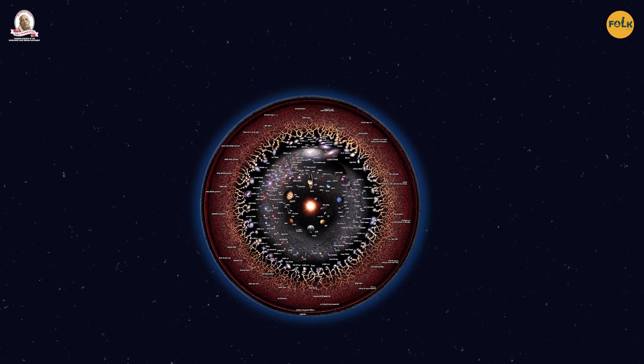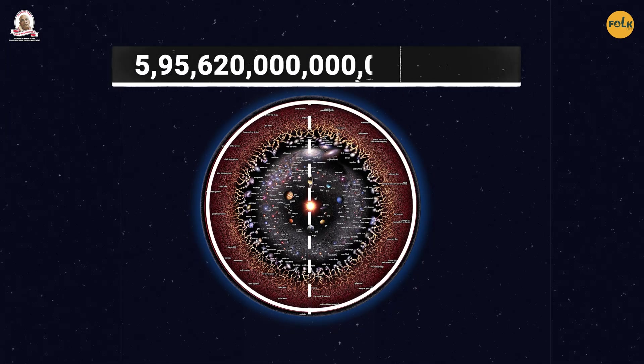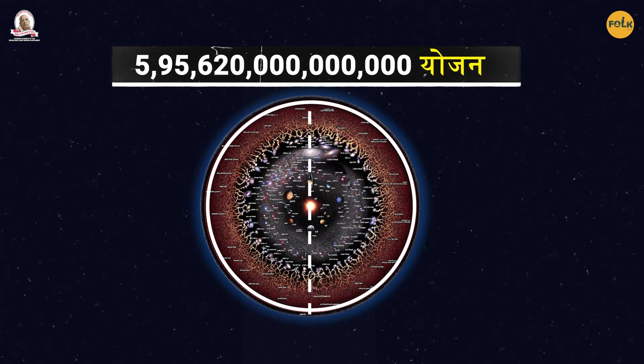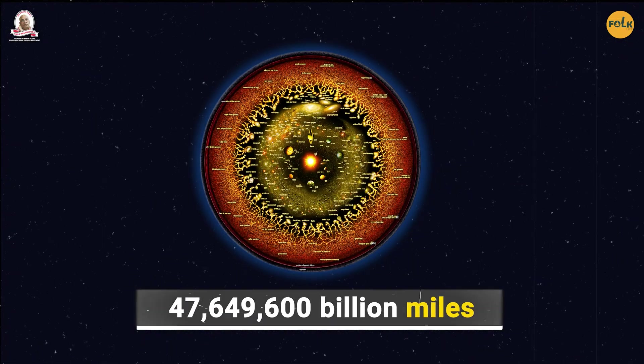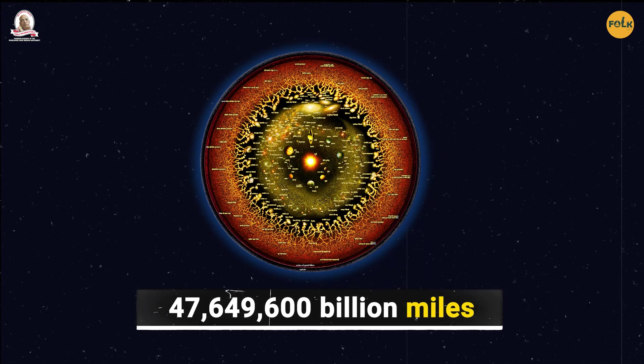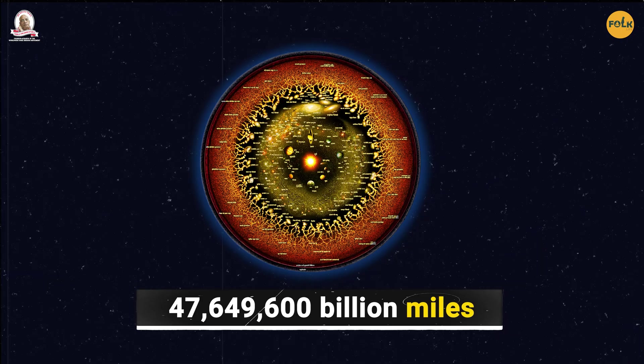who showed that the inner portion of our universe has a circumference of 18 crore 6,12,920 crore yajanas, which means the diameter of the inner portion of our universe is 47,649,600,000,000 miles. This is just the inner portion of the universe, which is prominently made of earthly elements.